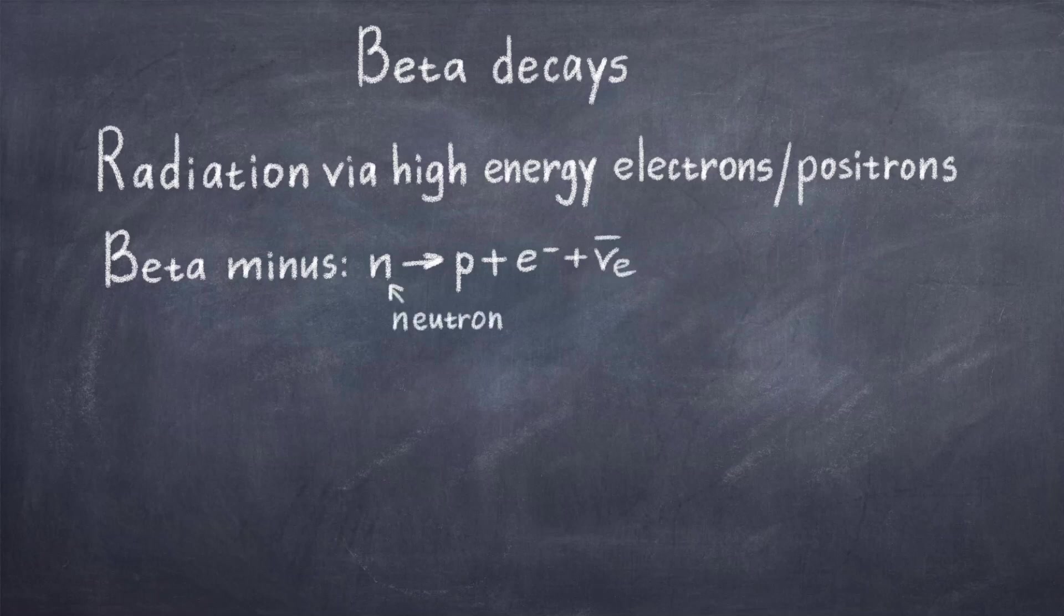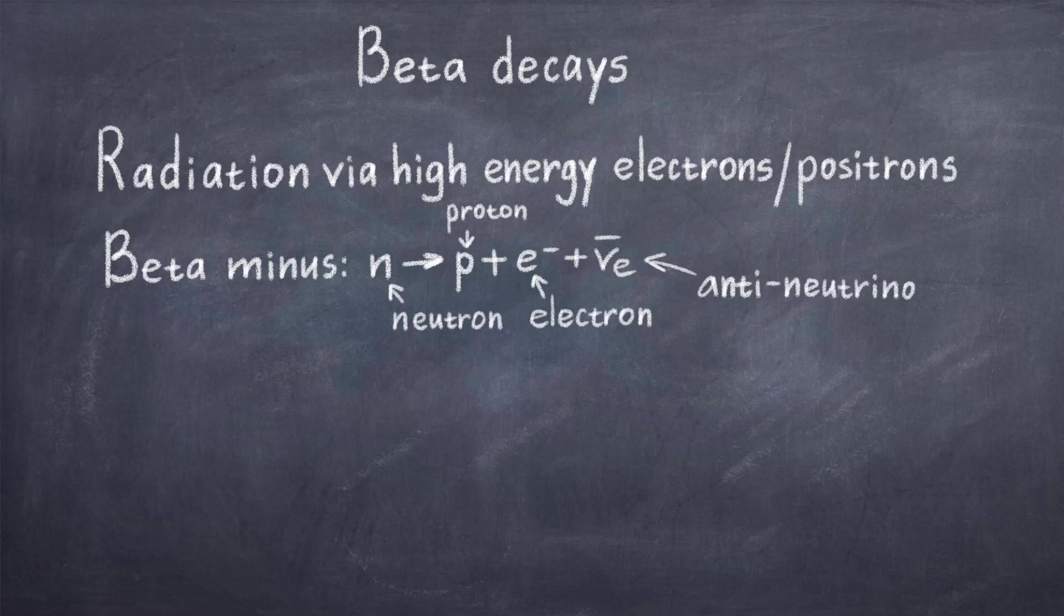We can write the process of beta minus decay in the following way, where a neutron N turns into a proton P plus an electron and an anti-electron neutrino. Likewise, the beta plus decay can be written as a proton P turns into a neutron N plus a positron plus an electron neutrino.